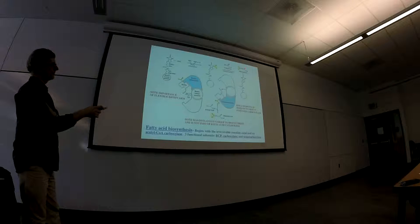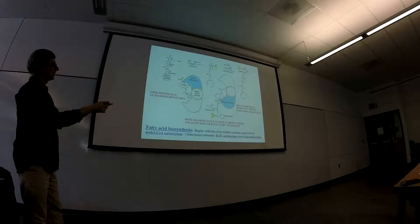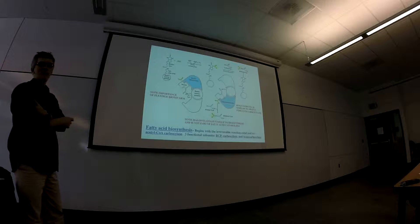Instead of making pyruvate though, which would be a three-carbon compound, we're going to make malonyl-CoA. So we're going to add the carboxylate on the side apart from the CoA, so we're going to form a carbon-carbon bond.